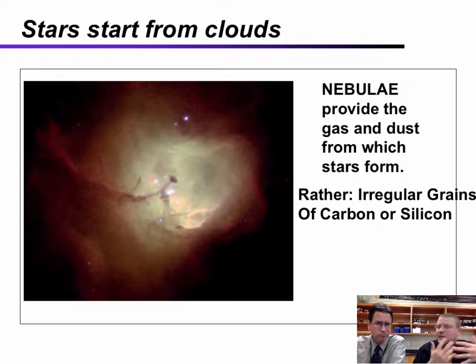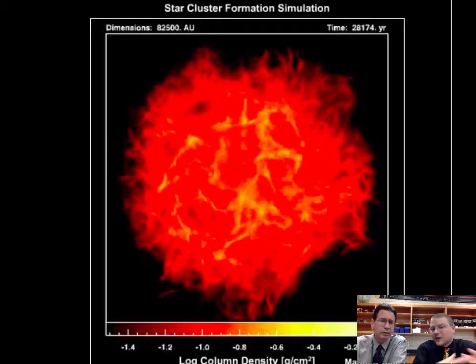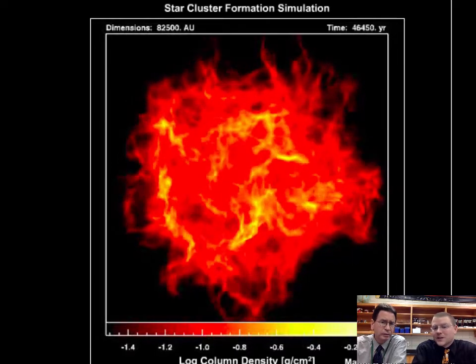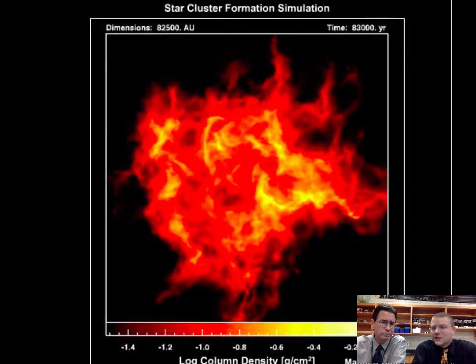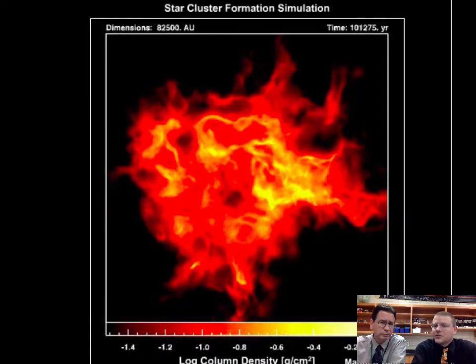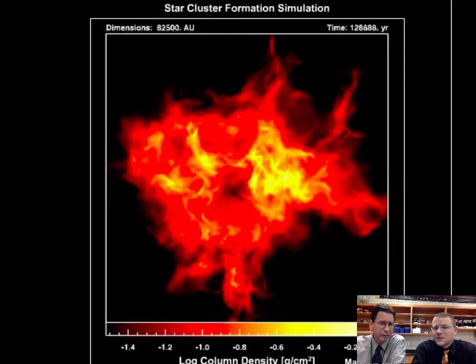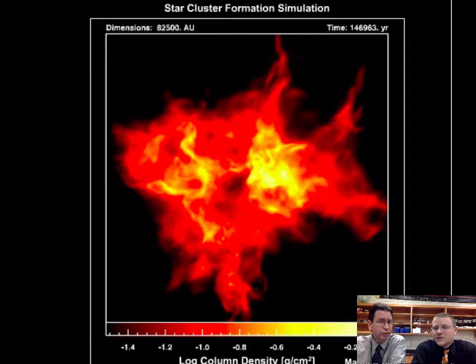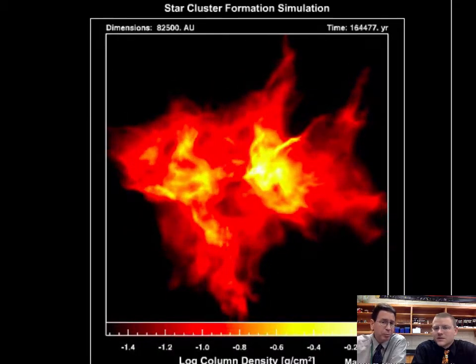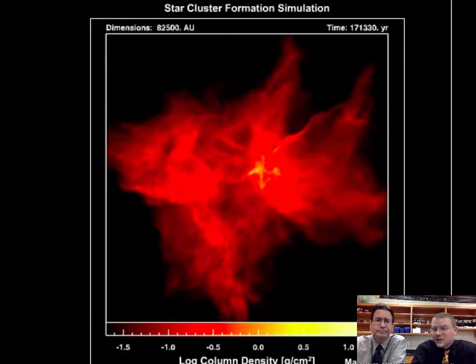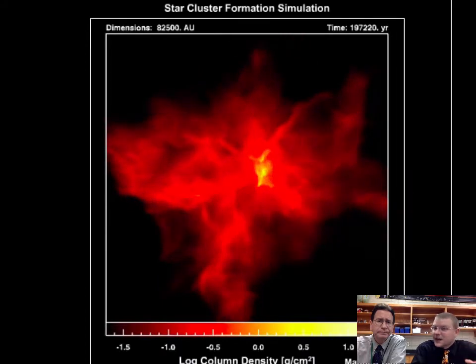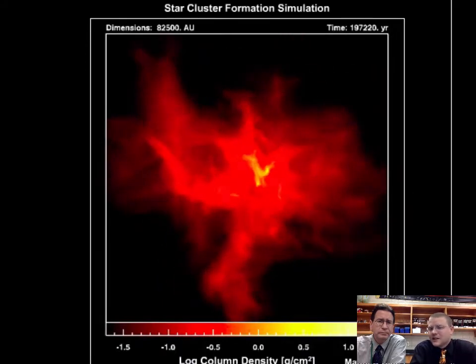So like you said, gravity is what brings all this together, and as gravity collapses the cloud, the cloud's going to increase in pressures and temperatures. Yeah, when it gets hot enough, what will happen is a very special process called fusion, which will make a star actually form at the center.